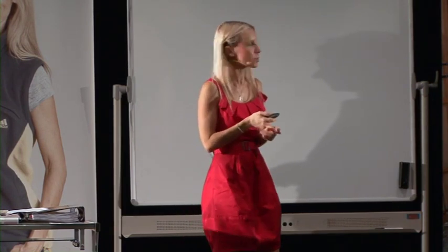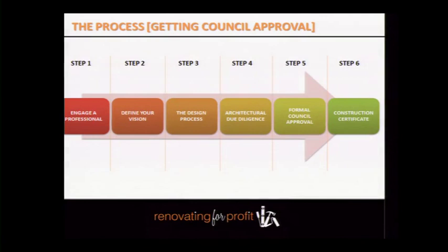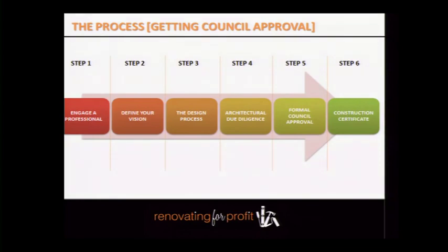The DA process works like this: first you engage a professional and work out your vision for the property. Then you go through the design process — architectural drawings — and your architect does due diligence on side setbacks, height controls, building line zones, front setbacks, and so on. It then goes to council for formal approval. Once you get formal council approval it moves to what's called a construction certificate application. We're going to go through that whole process today from start to finish.